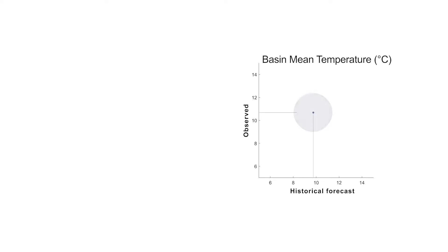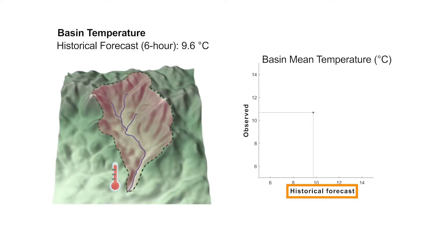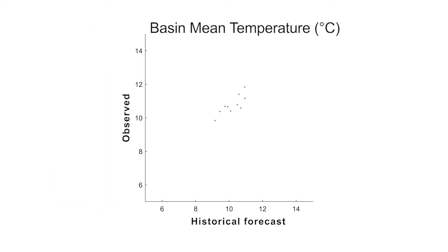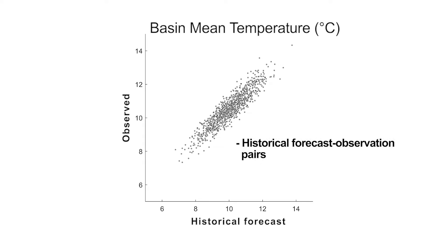We start with a point that represents a single historical forecast observation pair for a six-hour lead time in a given river basin. When many historical forecasts are compared with their corresponding past observations, we obtain a cloud of historical forecast observation pairs. This cloud is representative of a single forecast lead time and river basin.